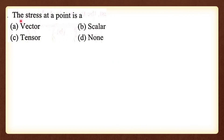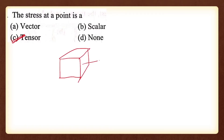First question: the stress at a point is — stress at a point is a tensor quantity. A vector at a point has one direction, but stress is a tensor quantity. Here we have sigma xx, tau xy, and tau xz on a cube element.